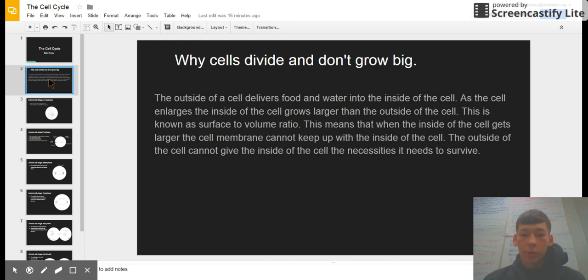The outside of a cell delivers food and water into the inside of the cell. As the cell enlarges, the inside of the cell grows larger than the outside of the cell. This is known as surface to volume ratio. This means that when the inside of the cell gets larger, the cell membrane cannot keep up with the inside of the cell. The outside of the cell cannot give the inside of the cell the necessities it needs to survive.